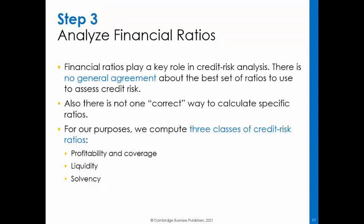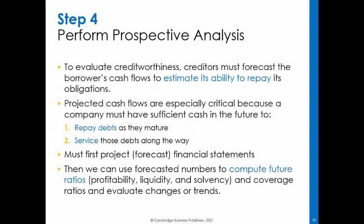Financial ratios play a key role in credit risk analysis. There is no general agreement about the set of ratios to use to assess credit risk. Further, it is not possible to specify the correct way to calculate specific ratios. Some ratios are universally defined, such as the current ratio, but many more ratios have no unique, commonly accepted definitions. For our purposes, we compute three classes of credit risk ratios: profitability and coverage, liquidity, and solvency.